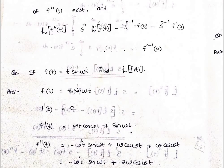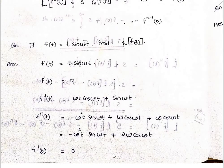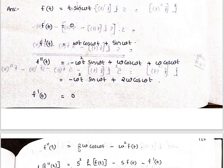Example: Let f of t equal t times sin(ωt). Then f of 0 equals 0. f dash of t equals ωt cos(ωt) plus sin(ωt). f dash of 0 equals 0.